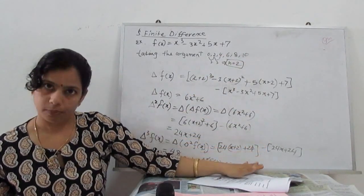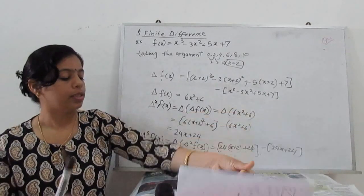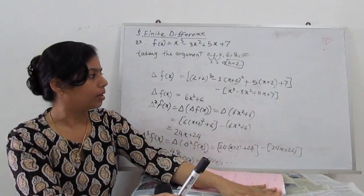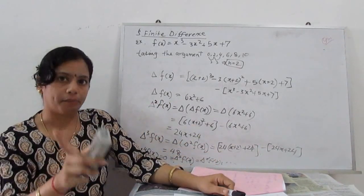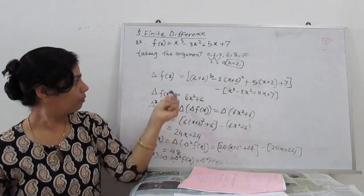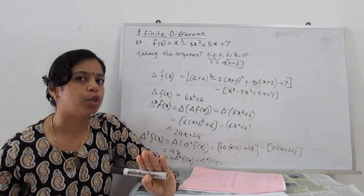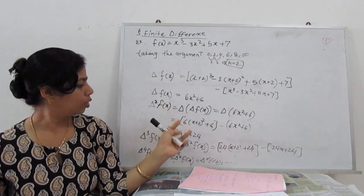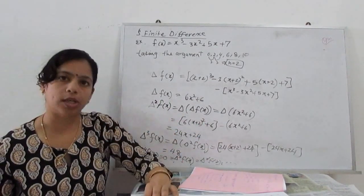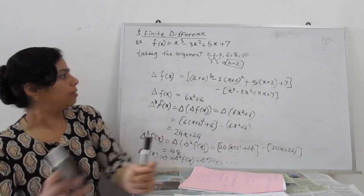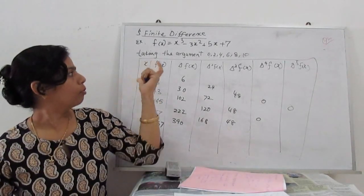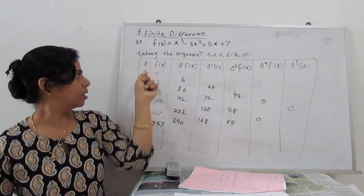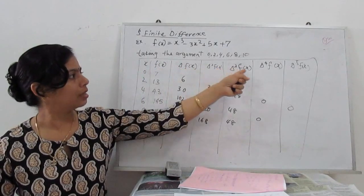Now we can construct the table. In tabular form, we evaluate the function at points x = 0, 2, 4, 6, 8 with h fixed. The columns are: x, f(x), first forward difference, second, third, fourth, and so on. For each x, we substitute to get f(x), then delta f(x), then delta squared f(x), and so on.